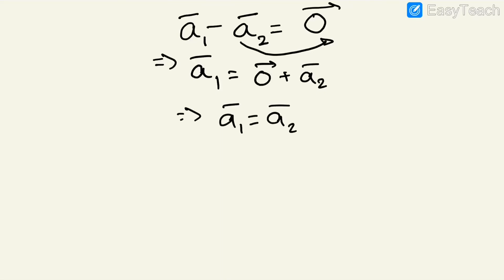When are two vectors equal? In terms of magnitude they should be equal, in terms of direction they should be equal, and in terms of components, individual components along each direction must be equal. So whenever someone asks what happens when you subtract two equal vectors, you say the result is the zero vector. This maintains mathematical consistency, as discussed in the previous class.